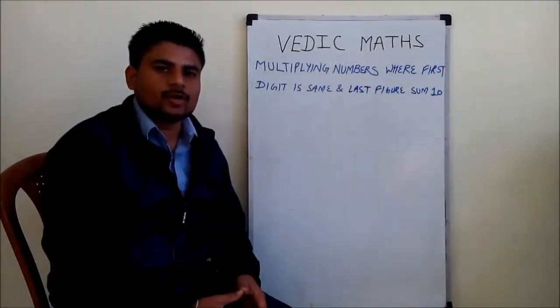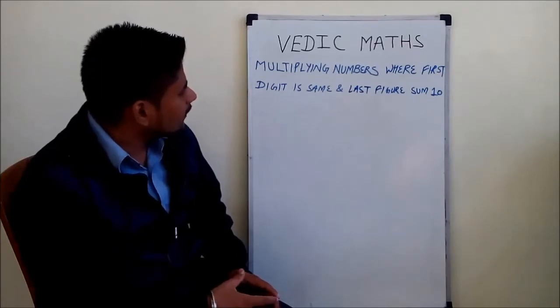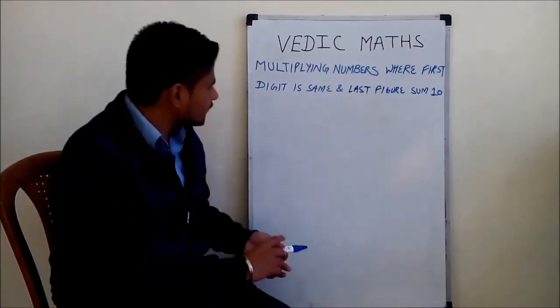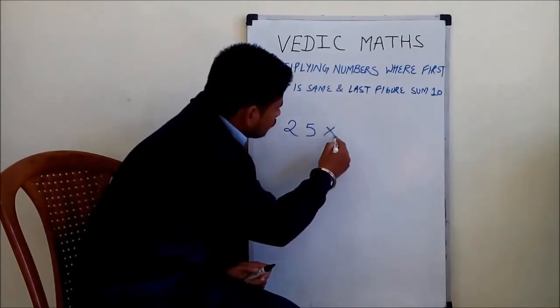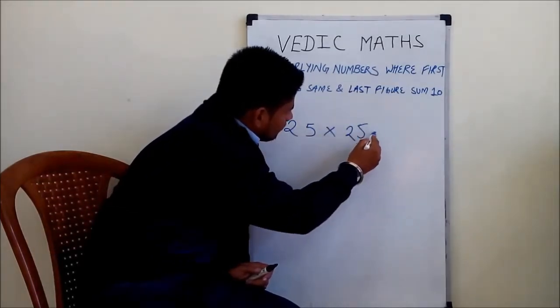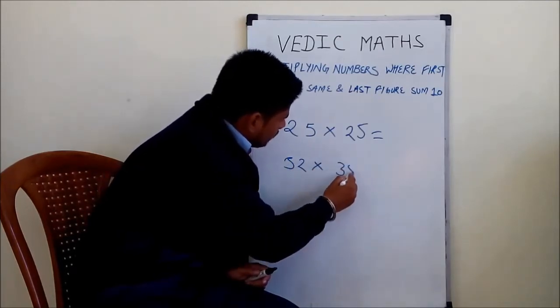Hello friends, in this video we talk about Vedic math tricks for multiplying numbers where the first digit is the same and the last digits sum up to 10. Here are examples: 25 into 25 or 32 into 58.